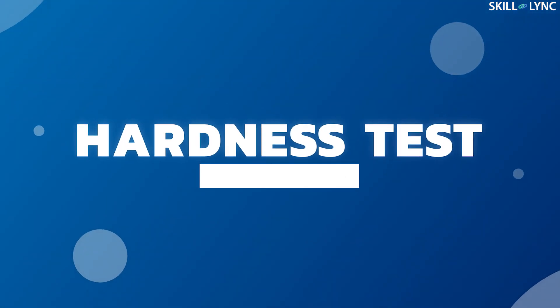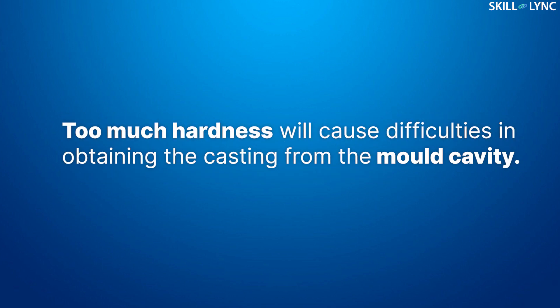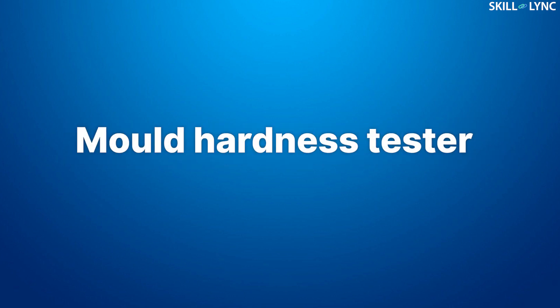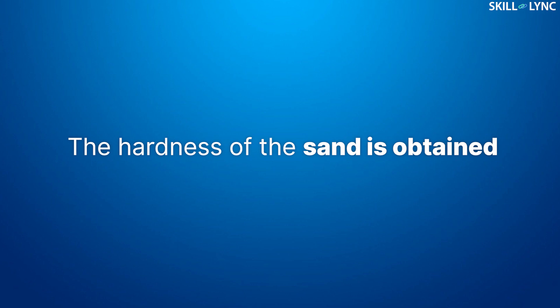Now let's move on to the hardness test. The molding sand must have sufficient hardness to avoid getting destroyed before the molten metal has solidified. At the same time, too much hardness will cause difficulties in obtaining the casting from the mold cavity. To perform the hardness test, an equipment called a mold hardness tester is used. A hemispherical ball of half-inch diameter is loaded with a spring load of 980 grams and made to penetrate into the sand mold. The penetration depth is indicated on a dial, and in this way the hardness of the sand is obtained.